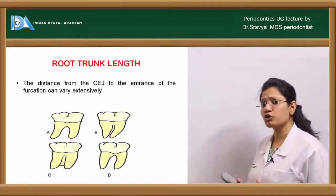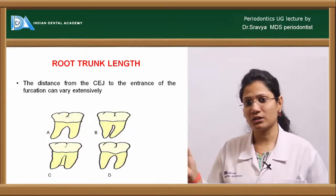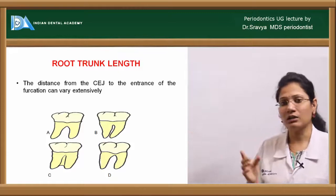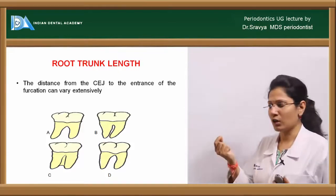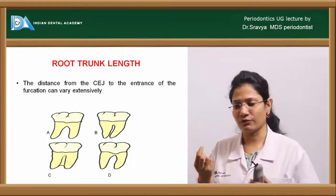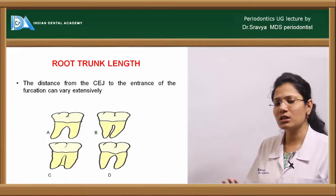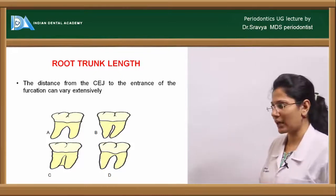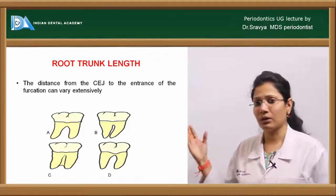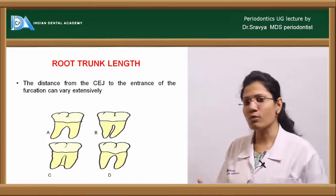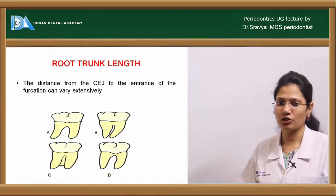This picture also illustrates the cervical enamel projections classification. In image A, a small lobule or enamel projection is seen at the cementoenamel junction but is not yet entering the furcation area. In image B there is slightly more extension, and in image D the enamel projection is almost entering the furcation area.